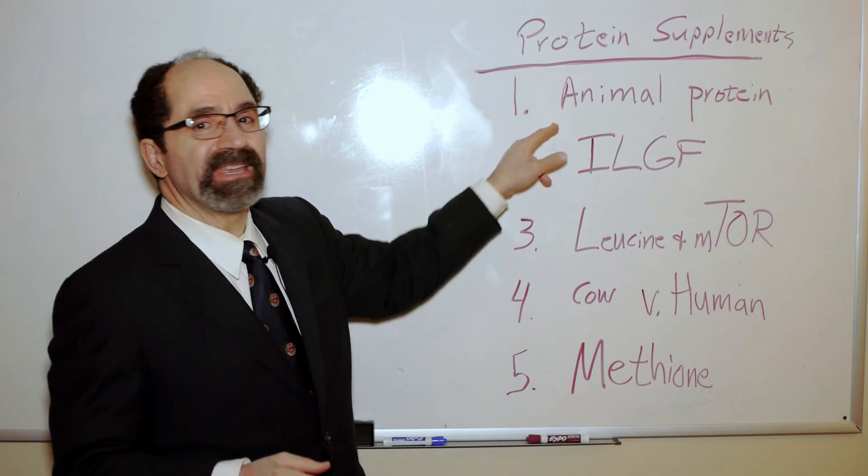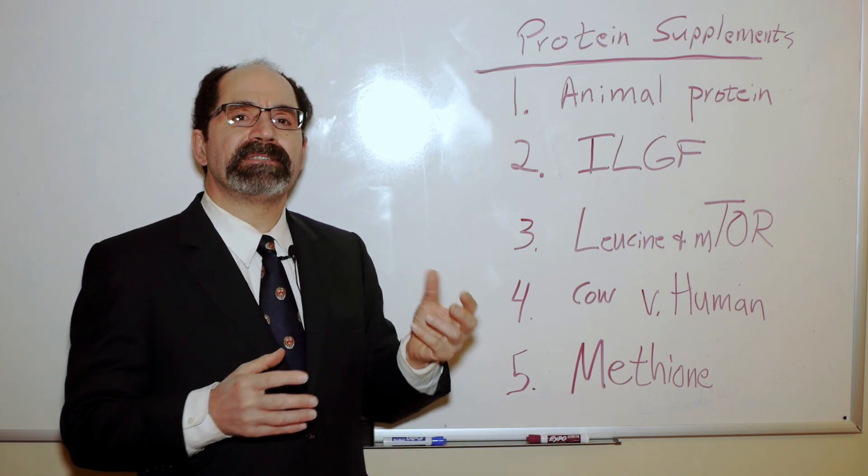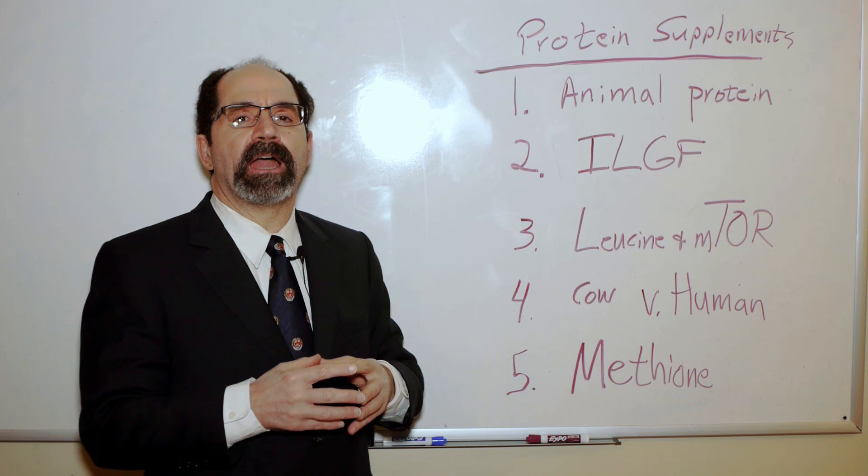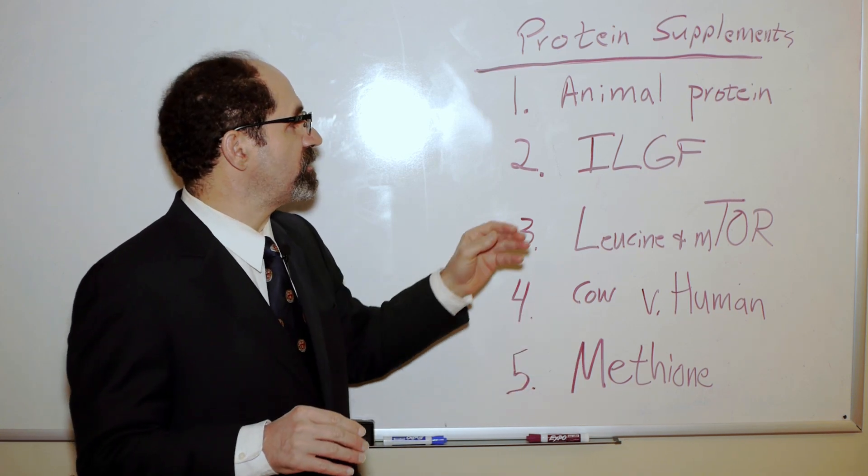Animal protein is different than plant protein. Animal protein contains more leucine and more methionine. Leucine and methionine are special types of amino acids. We're going to go into those in more detail in just a sec.